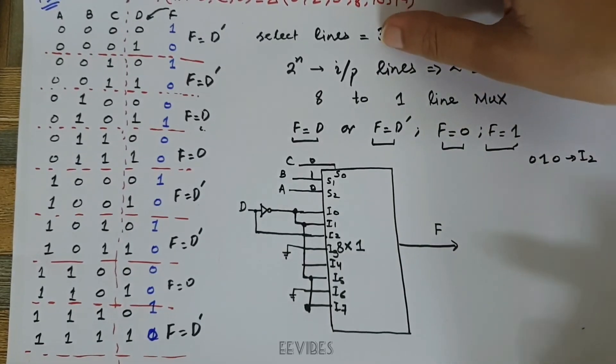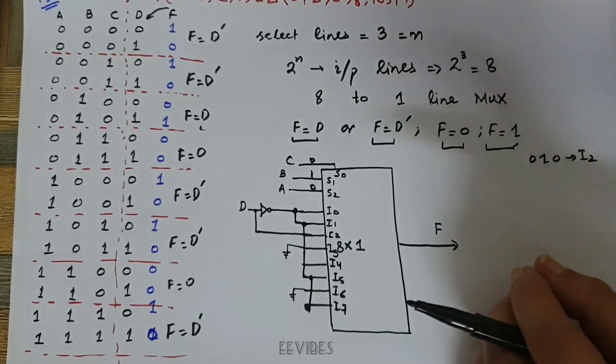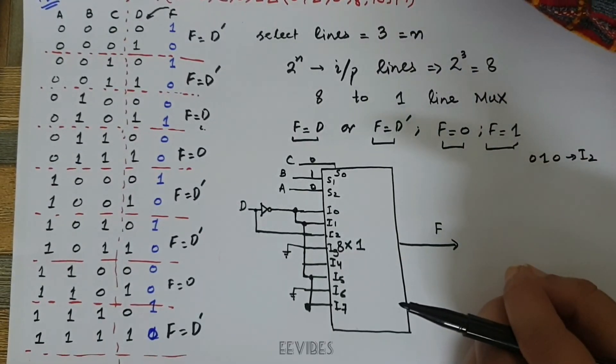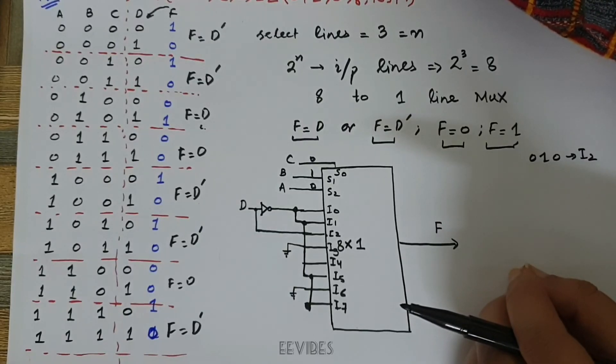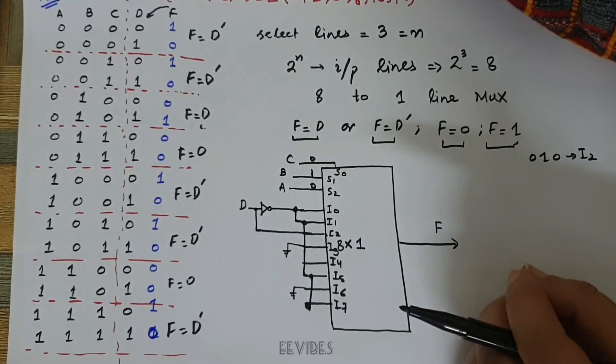In part b you have been asked to implement the function again using a multiplexer, but this time with a different approach.